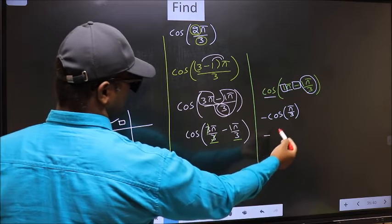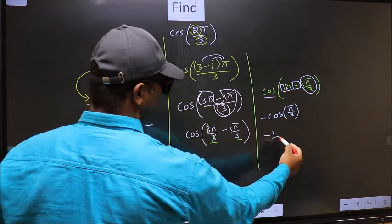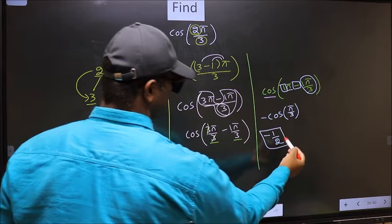So negative cos π by 3 is 1 by 2. So this is our answer.